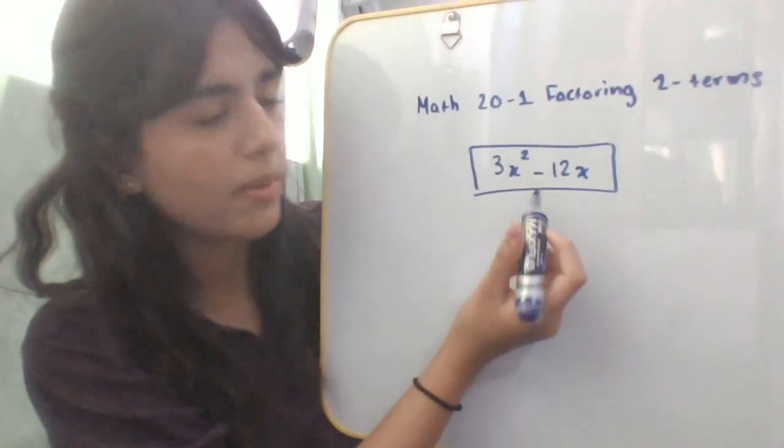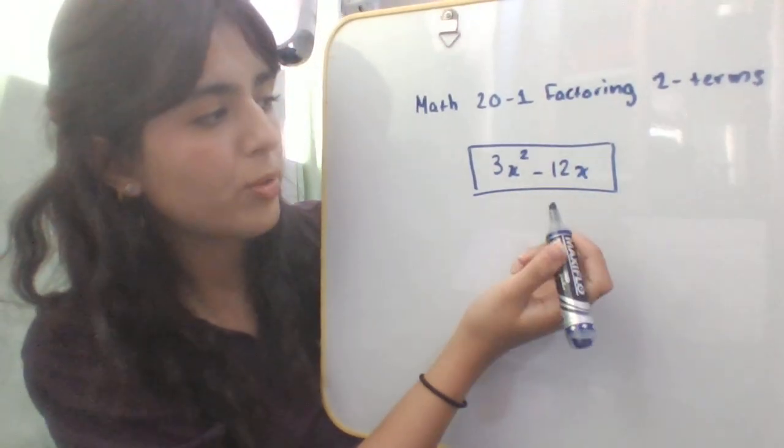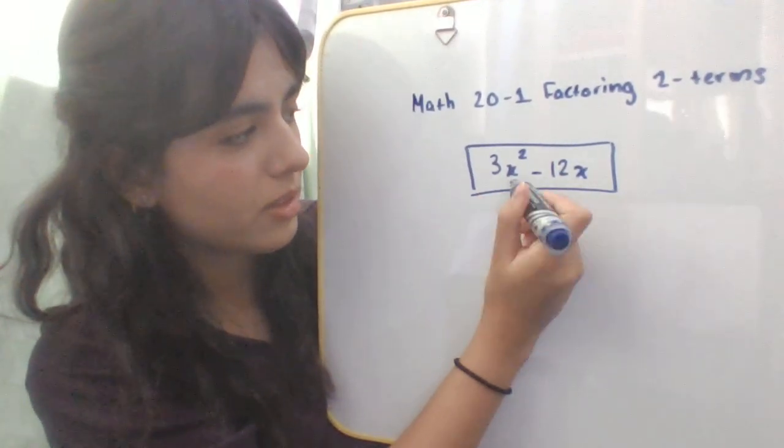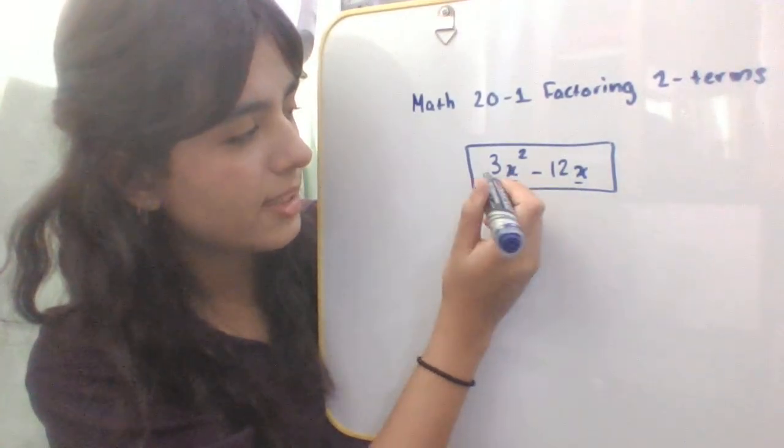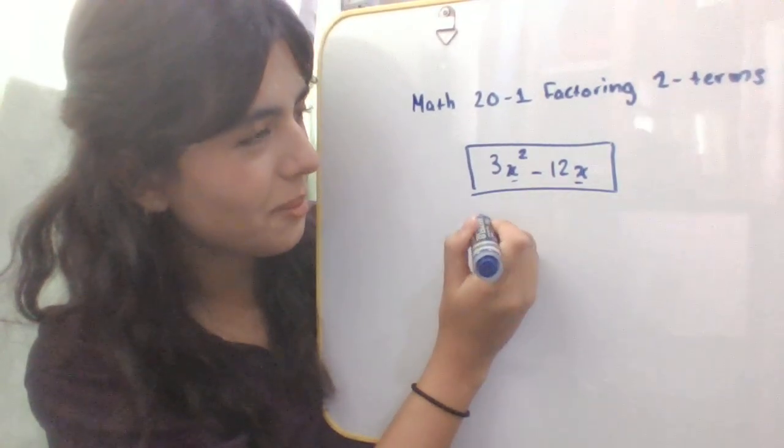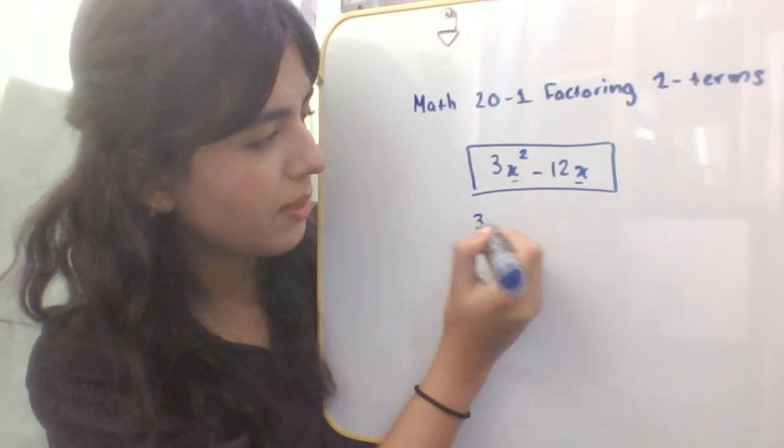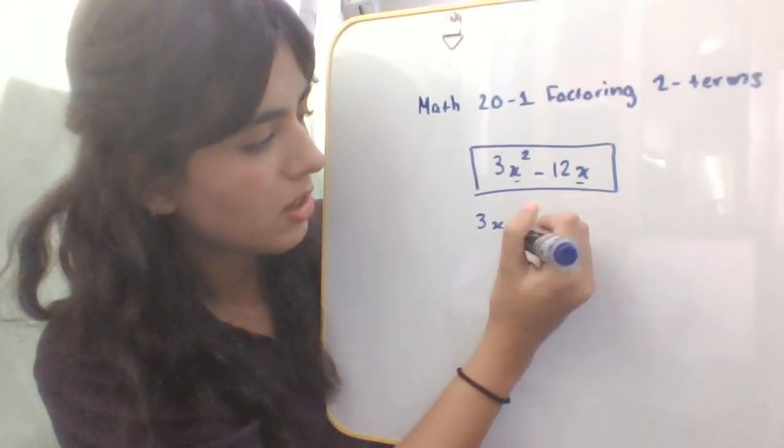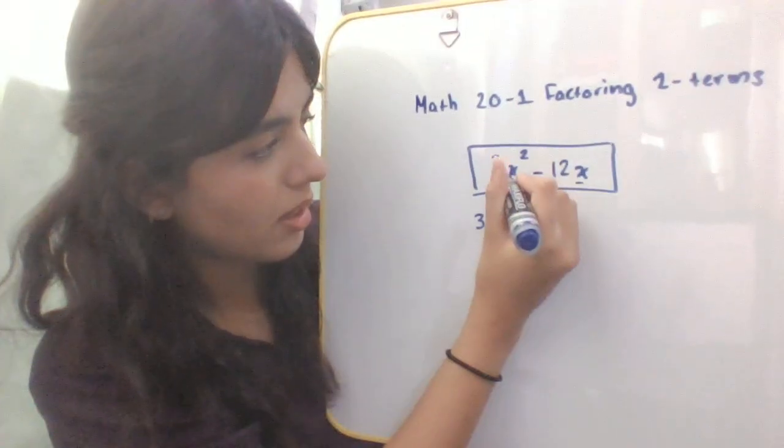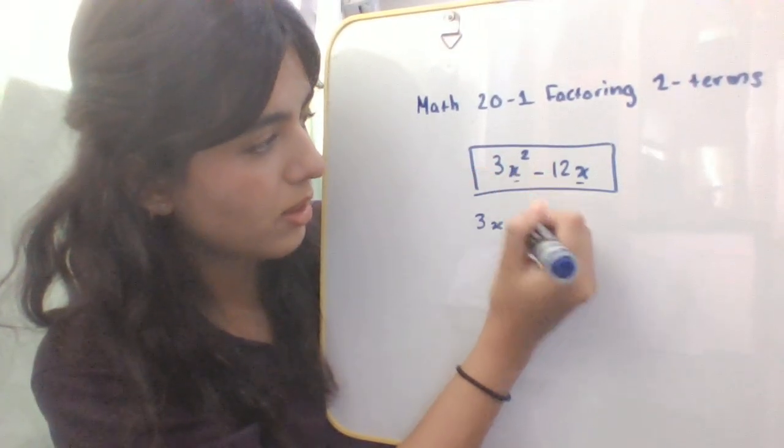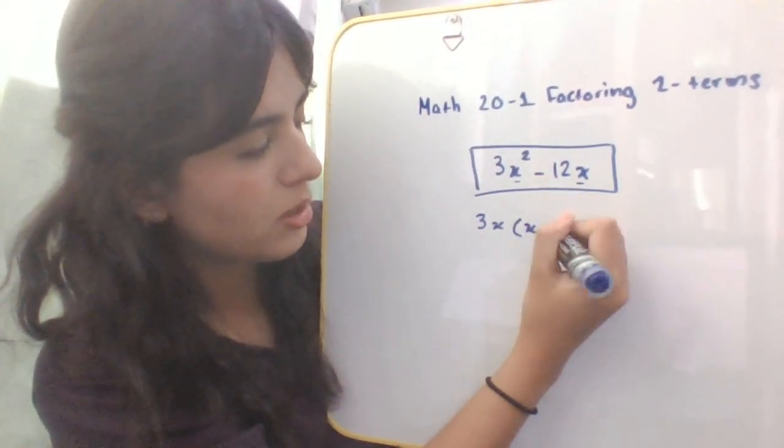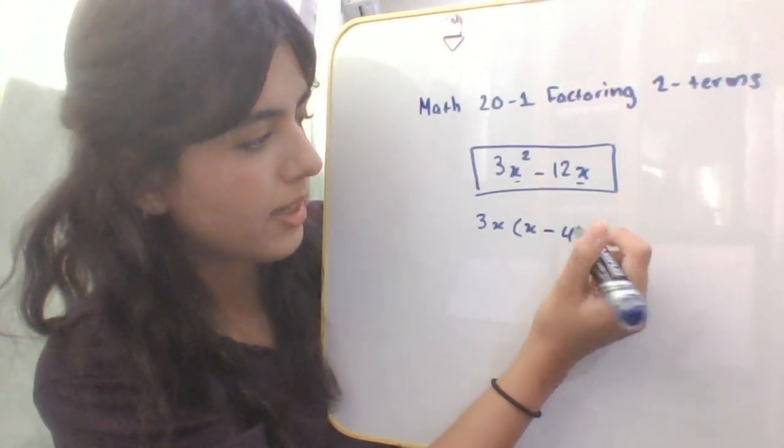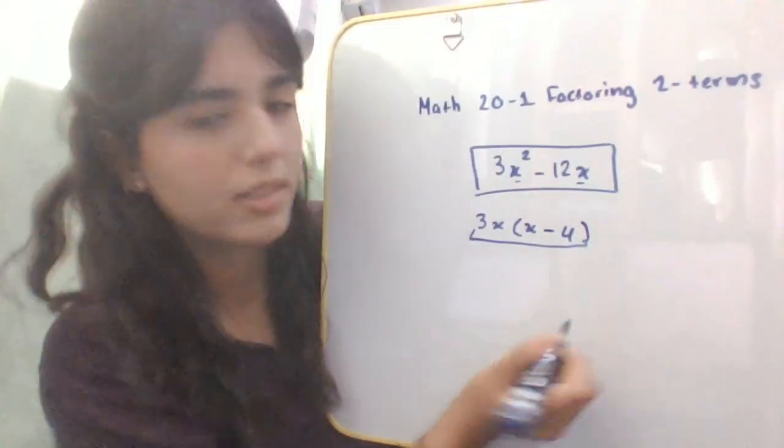Here is another two-term example and you would repeat the process the same, except here you can see you can take out more than a number because there's two x terms. You can take out a 3 because they're both divisible by 3, and you can take out an x because they're also divisible by x. Inside you would write x² - 4 because 3x² divided by 3x is just x, and 12 divided by 3 is 4. This would be your final factored form, 3x(x - 4).